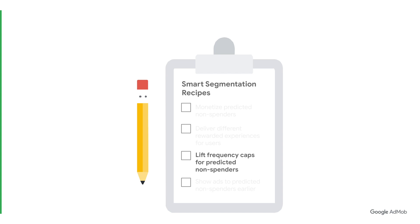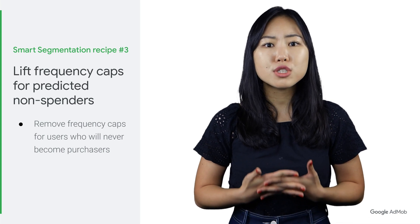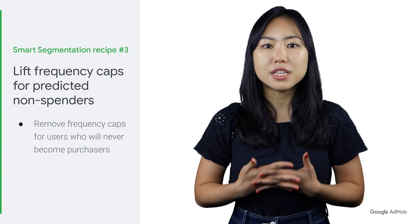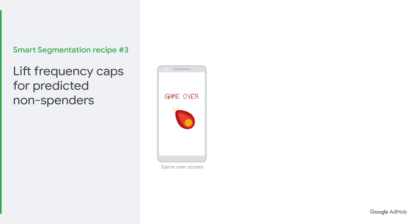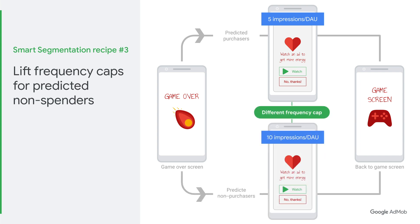Our third recipe is removing frequency caps for predicted non-spenders. Because the majority of your app users will never make an in-app purchase, you can use smart segmentation to set higher frequency caps for non-purchasers. This works for both interstitial and rewarded ads. For example, let's say you usually put your ads at the end of your game. For predicted purchasers, you would only show up to 5 impressions per user per day. With a smart segmentation ad unit, after the fifth impression, you can show more impressions to predicted non-spenders — in this example, 5 more impressions per user for a total of 10.